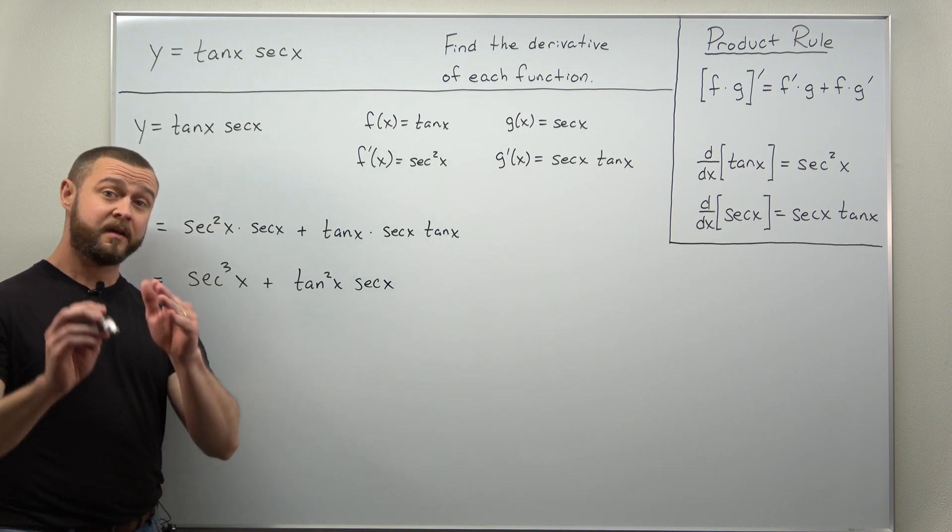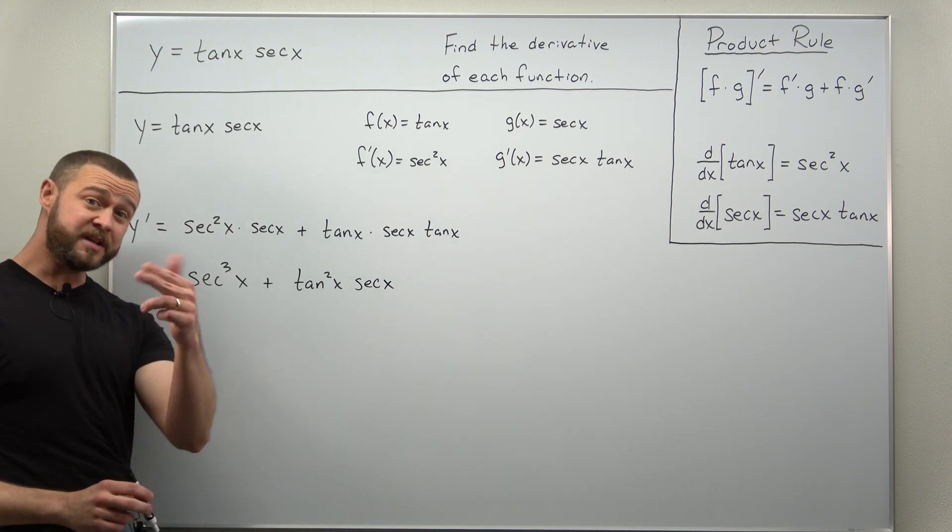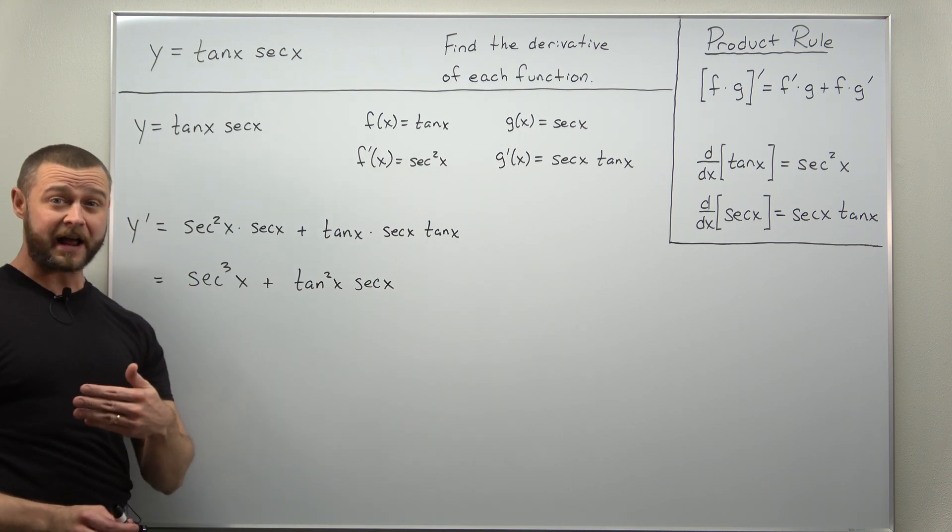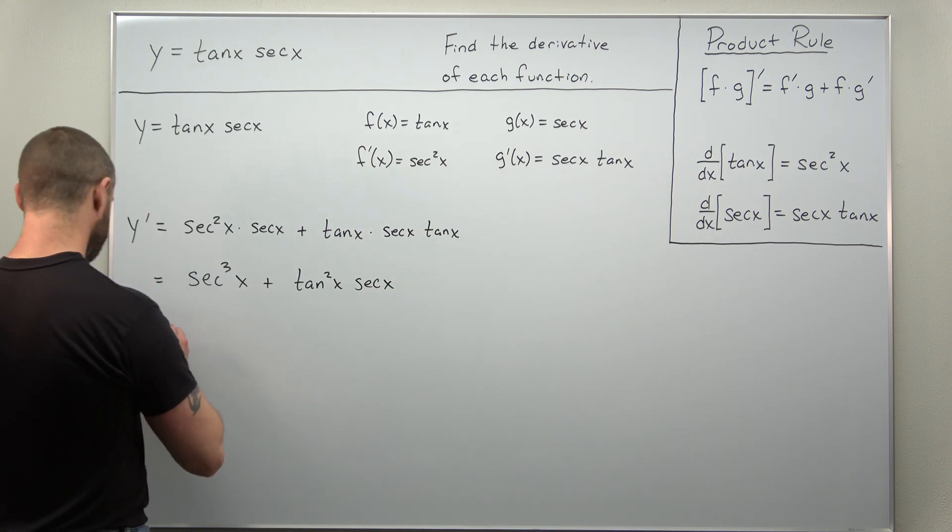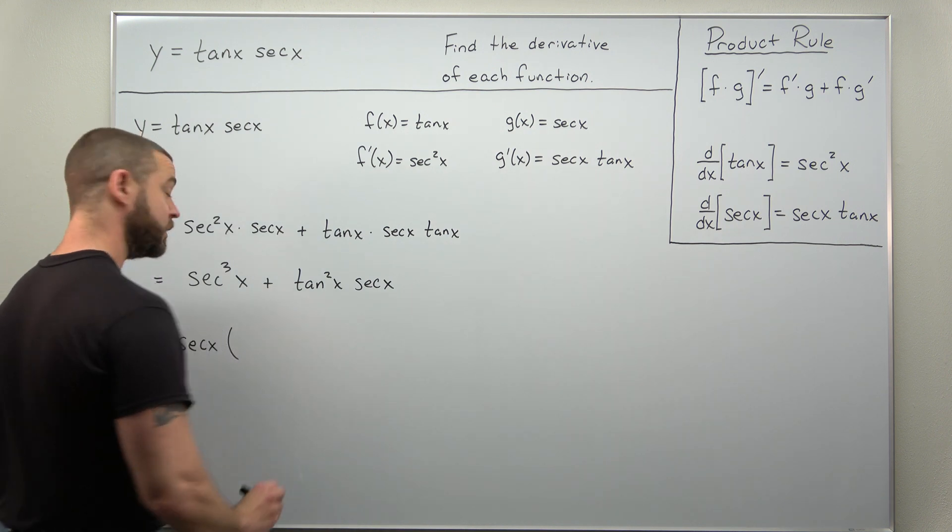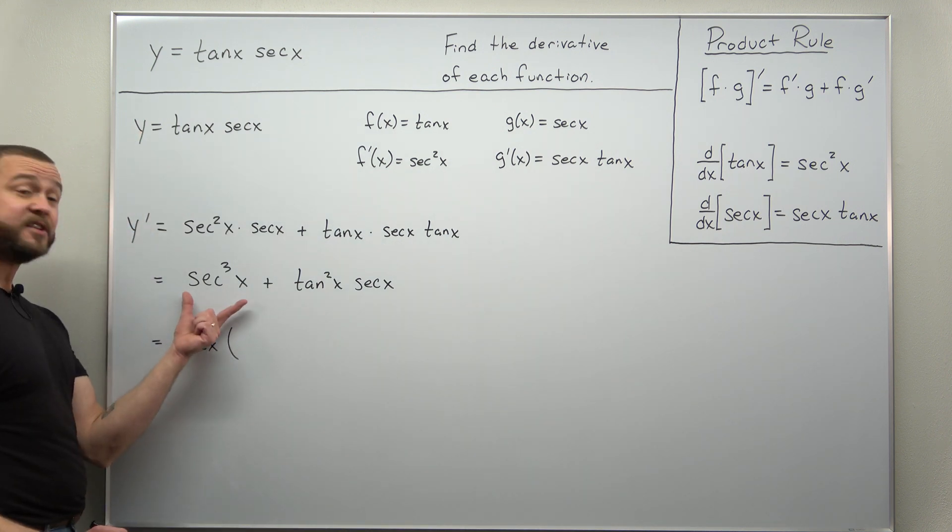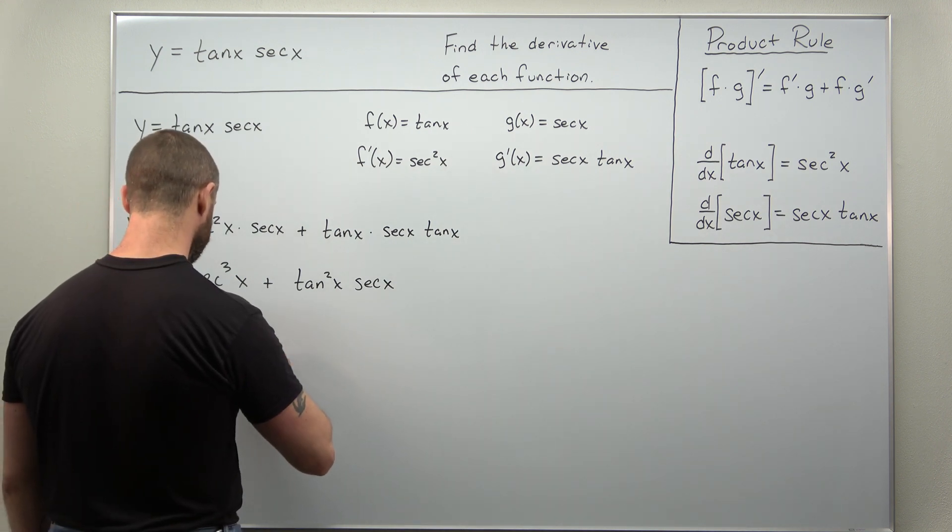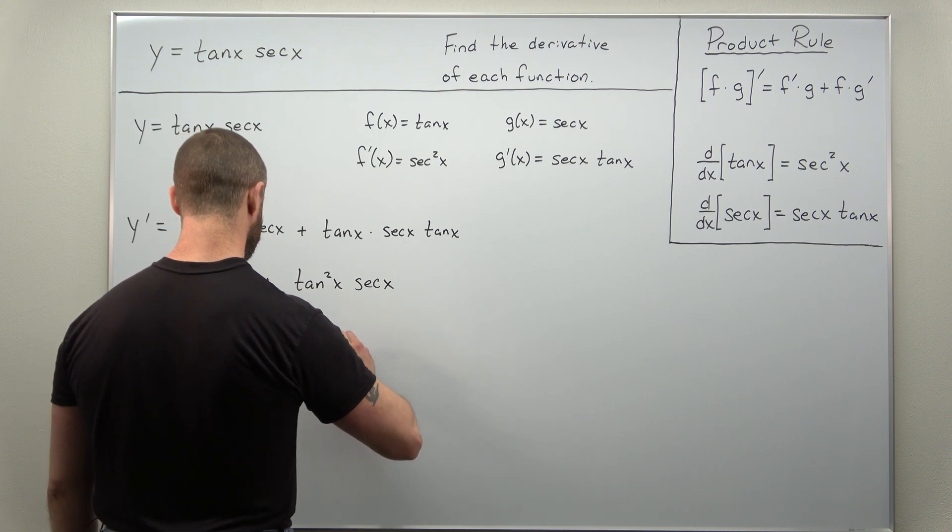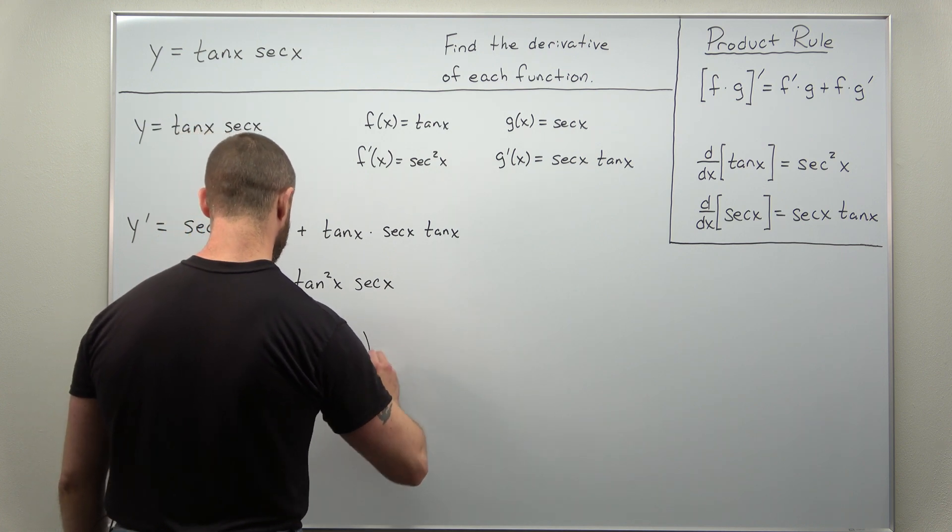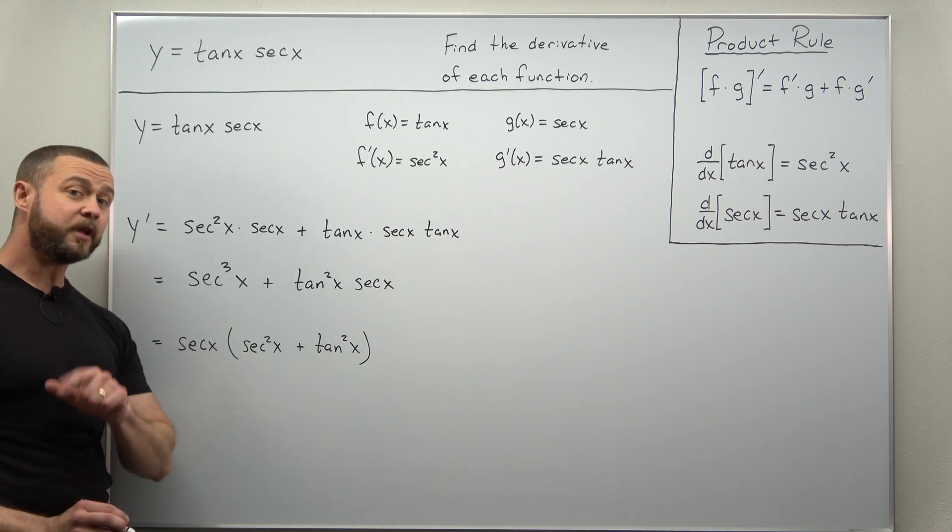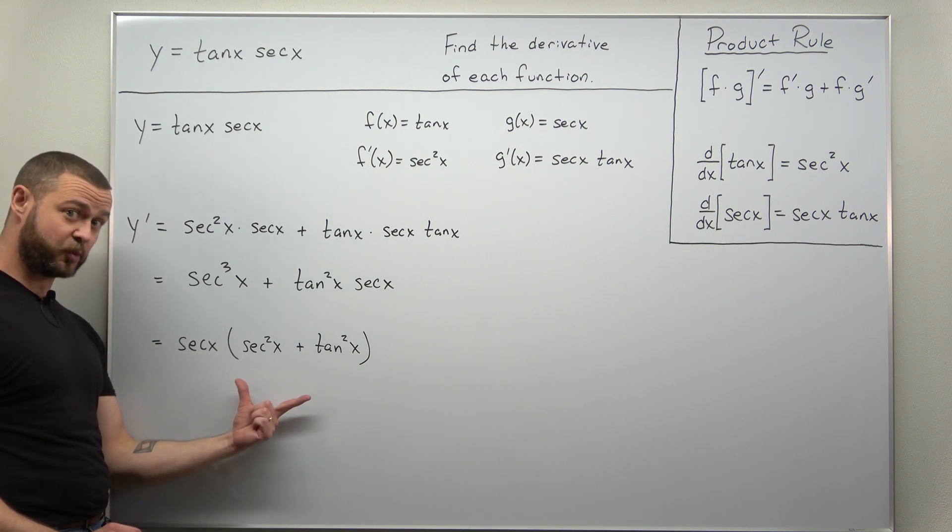And there we go, that's probably about as simplified as you need to take it. If you really want to, you can factor out secant of x, in which case inside of parentheses you would have secant squared of x plus tangent squared of x.